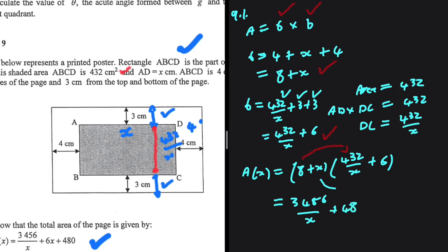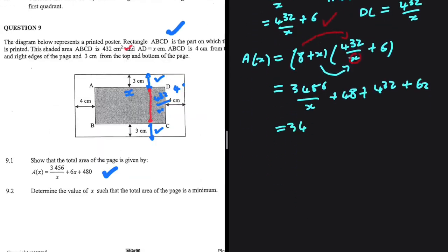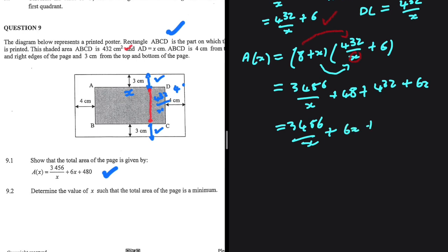Now we multiply x by 432. We are going to get 432x, there's this x on the denominator so they will cancel out plus 6x this will be equals to 3456 divided by x plus 48, 48 plus 432 that is 480 so we're gonna have 6x plus 480. This is exactly what we are required to show.